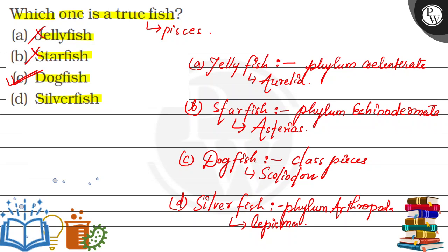So, that means these three are not our true fish, because these three are invertebrates and they belong to different phyla. So the true fish is our dogfish, which is option C. I hope you understand this answer. Thank you.